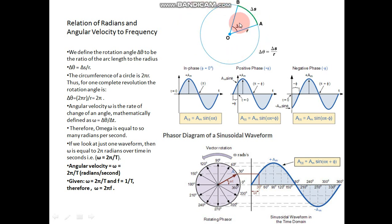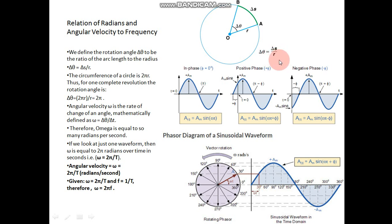If point B moves all the way around back to A, this angle becomes 2 pi. How does it become 2 pi? The circumference is 2 pi r, so arc divided by radius gives 2 pi r divided by r, which equals 2 pi. Angular velocity is the rate of change of angle: omega equals delta theta divided by delta t, or arc length upon radius divided by t. So omega is delta theta over delta t, and from this, theta equals omega times t.